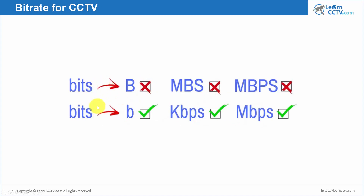Bits are represented with a lowercase 'b'. Don't represent bits with an uppercase 'B' — you sometimes find that in documentation or on the internet, but it's not the most accurate. The correct notation is lowercase 'b', kbps with lowercase 'b', and Mbps with lowercase 'b'.